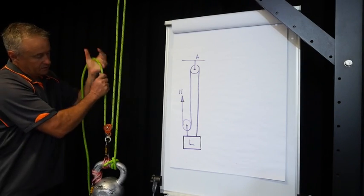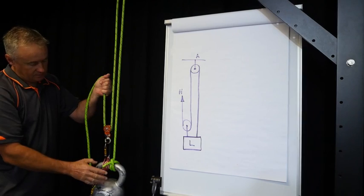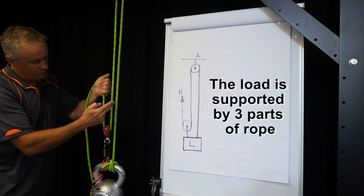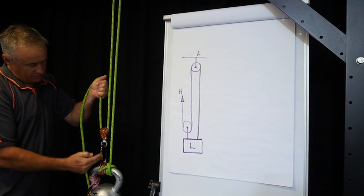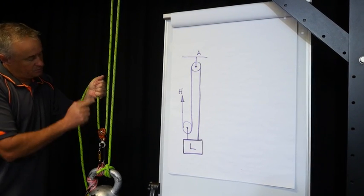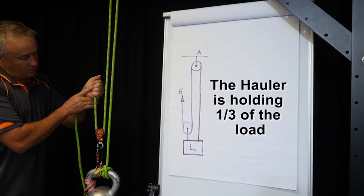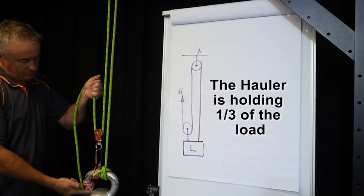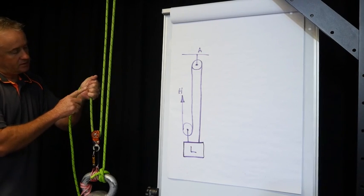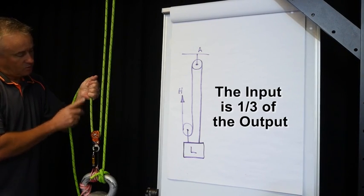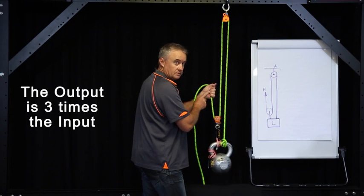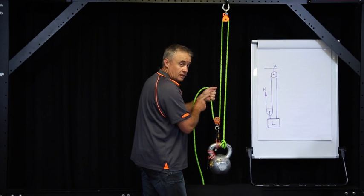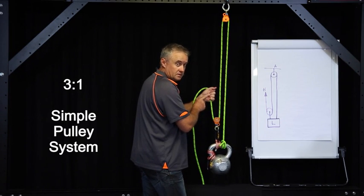So if we suspend the load, we'll see that the load is being supported by three parts of rope, either directly or through the travelling pulley. Which means that the hauler is holding one third of the load, or in other words, the input is one third of the output. So the output is three times the input. In this case, we have what we call a three-to-one simple pulley system.